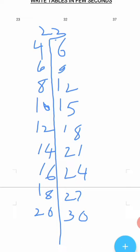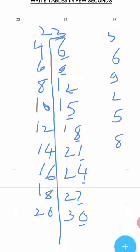Now take all the ones-digit numbers from the table of 3. In 23, the ones digit is 3, so the ones-place digits go: 3, 6, 9, 2, 5, 8, 1, 4, 7, 0. Write these numbers first: 3, 6, 9, 2, 5, 8, 1, 4, 7, 0.